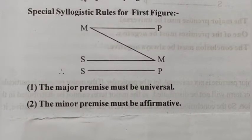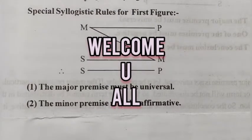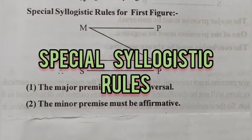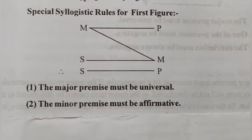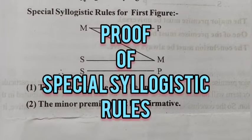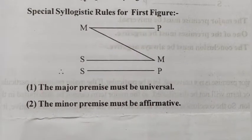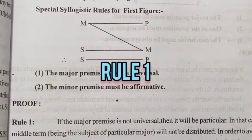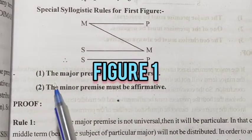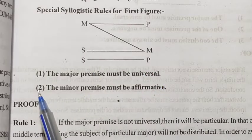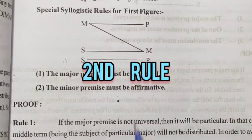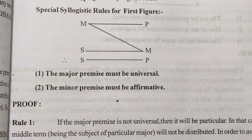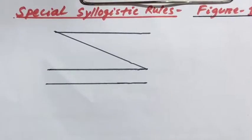Hello friends, welcome. Today I will teach the proof of special syllogistic rules of Figure 1 and Figure 2. Please watch the class; if you have any doubt, please ask in the comments. Let's discuss the proof of special syllogistic rules of Figure 1 and Figure 2. The special rules of different figures can be proved by the help of general syllogistic rules. Rule 1 of Figure 1: the major premise must be universal. Rule 2 of Figure 1: the minor premise must be affirmative. Now I will prove how this is possible.